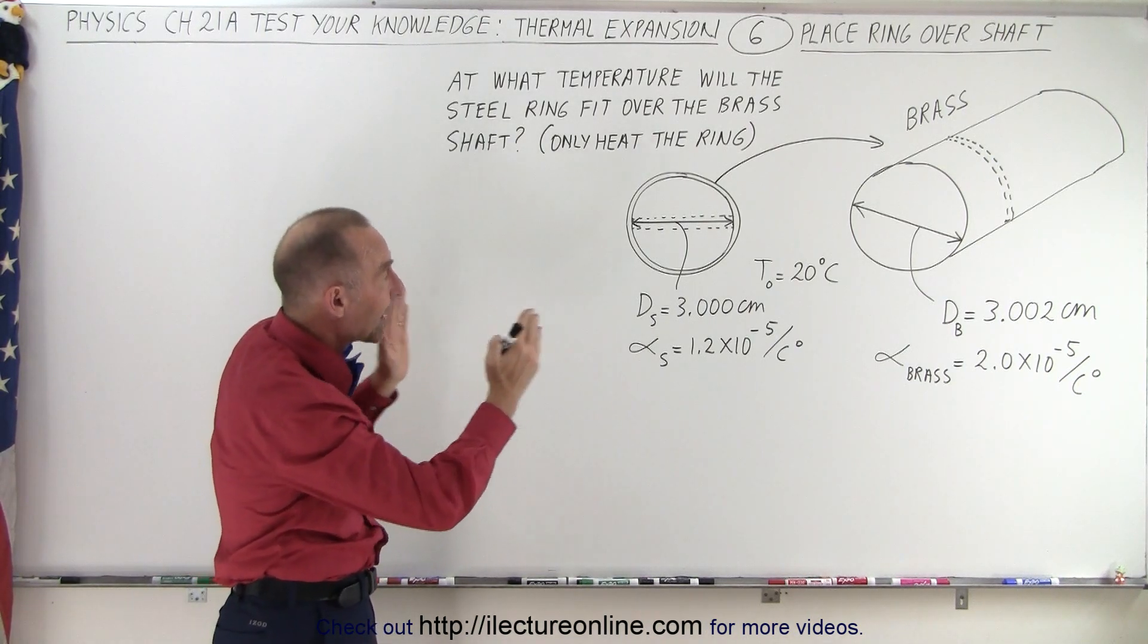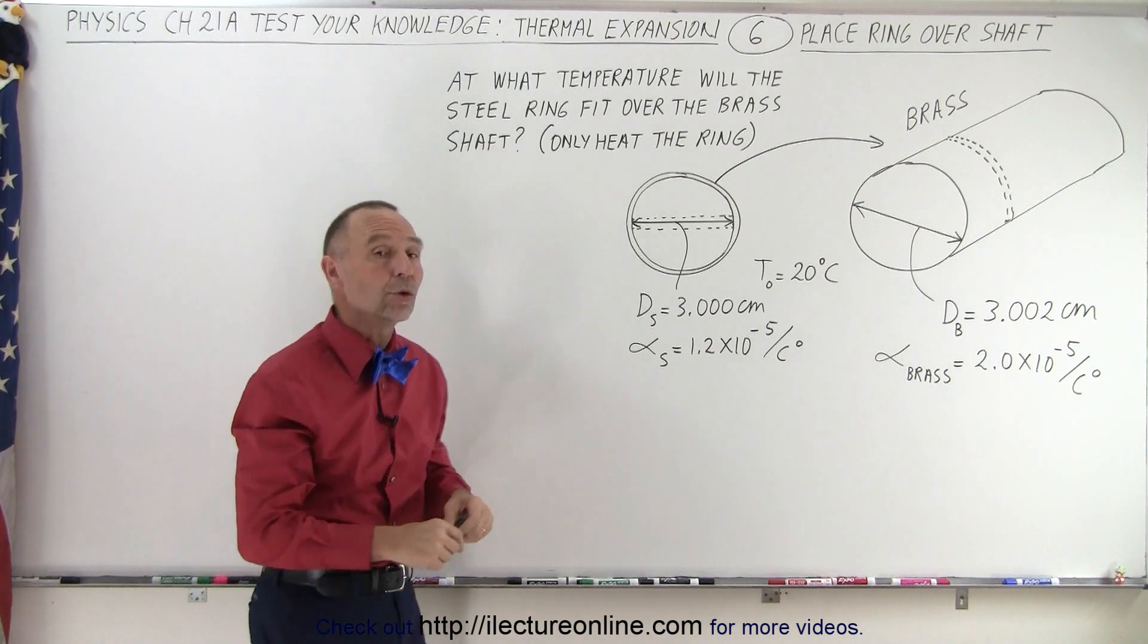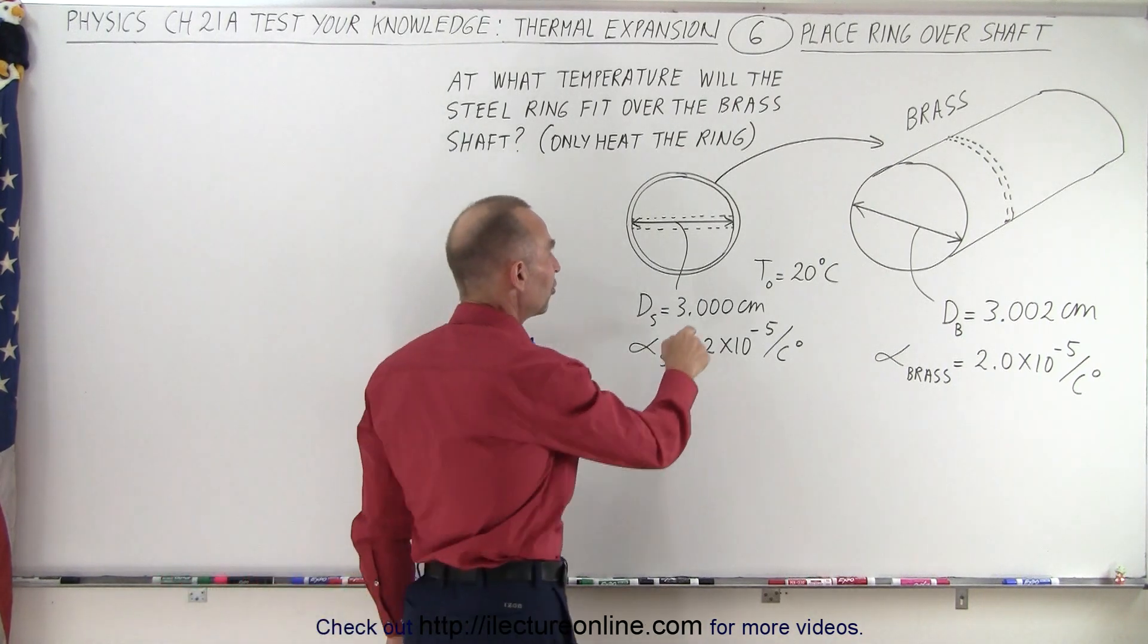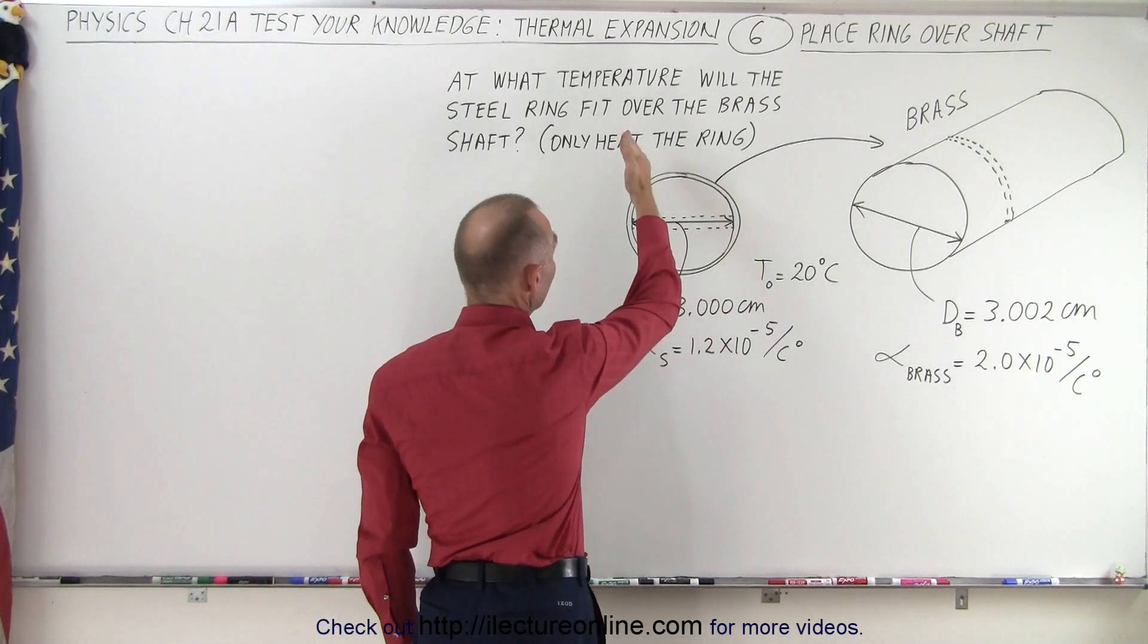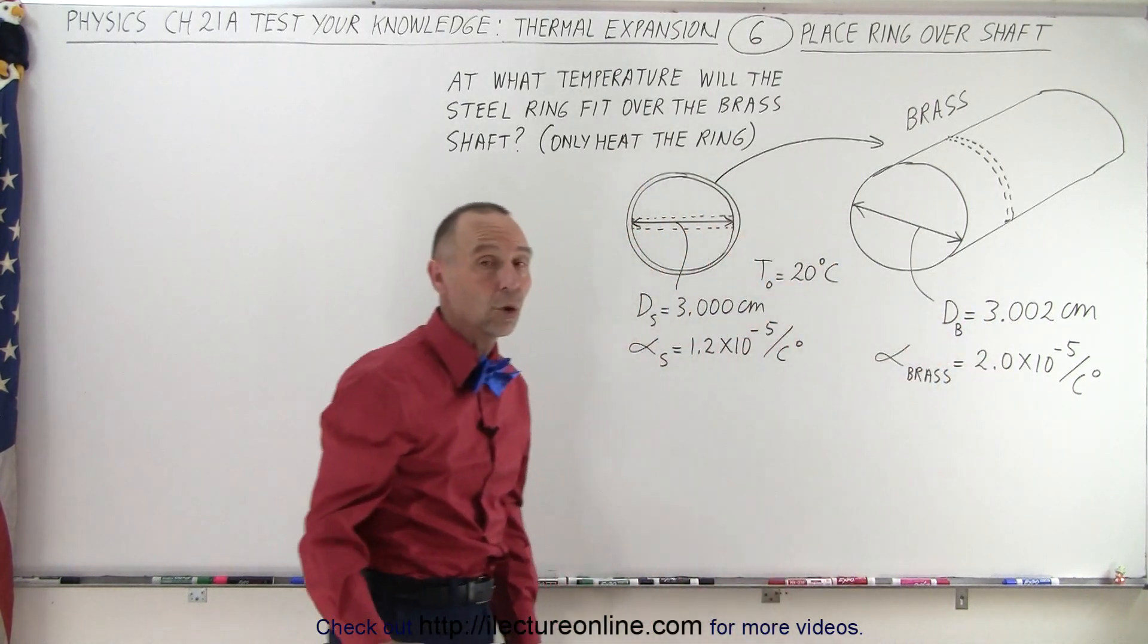So the inner radius will expand outward with an increase in temperature, just like a steel ruler would of that exact same length. So what we can do then is try to figure out what temperature would be required in order to get the inner diameter to be 3.002 centimeters.